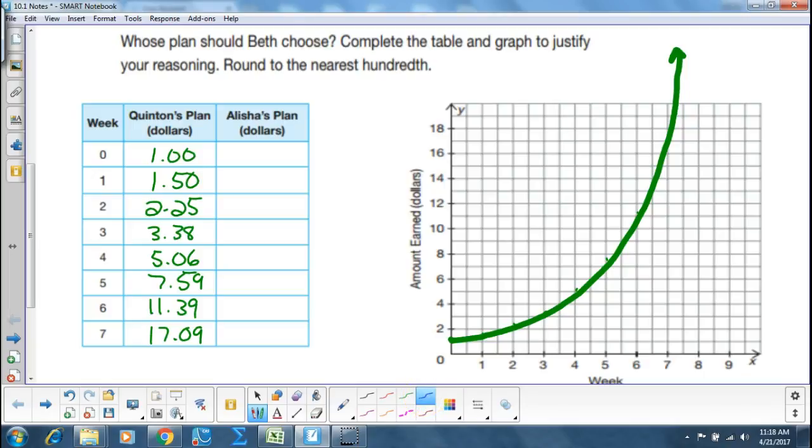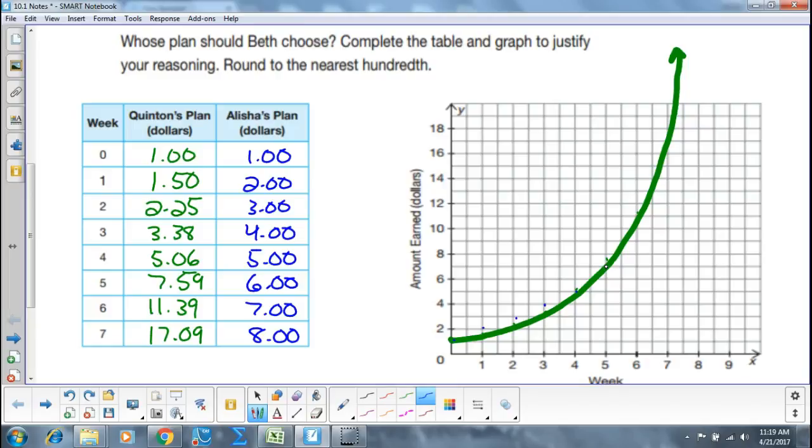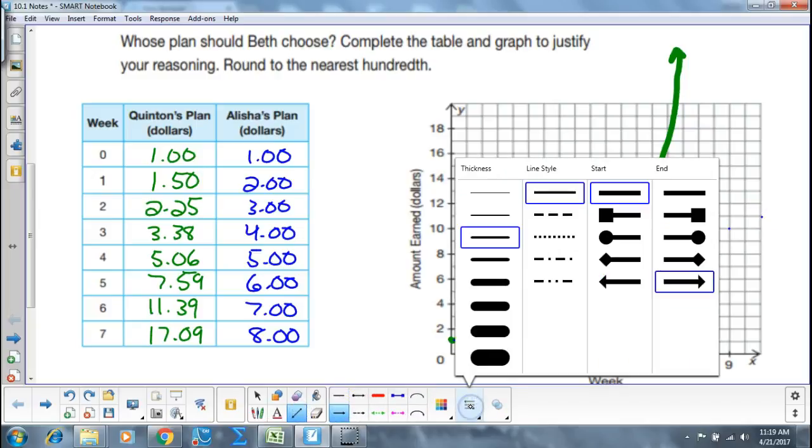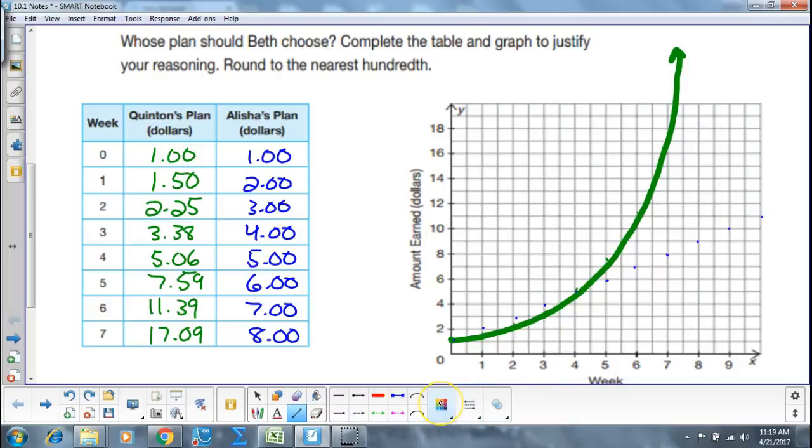I'm going to go with blue for Alicia then. So she started with a dollar. Next time, one, two, three, four, five, six, seven, and eight. So she started, so they started at the same point. Then she goes a little bit more, a little bit more, a little bit more. What kind of a function does Alicia have going on? She's got a linear one going on.